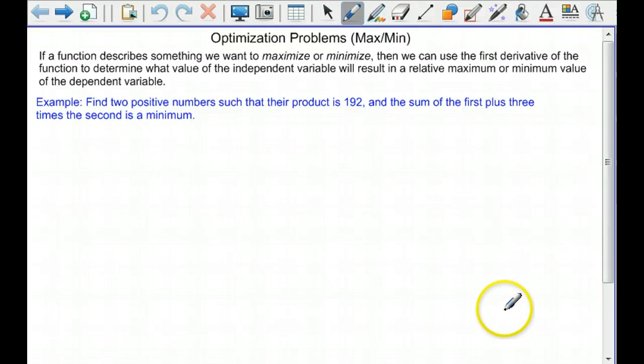Now we're going to talk about how to solve a certain class of problems called optimization problems. Sometimes they're referred to as max-min problems because what you're trying to do is take a function and either maximize it or minimize it. If we have a function that describes something we want to maximize and minimize, then we can use the first derivative of the function to determine what value of the independent variable will result in a relative maximum or minimum value of the dependent variable.